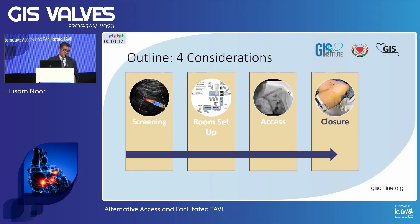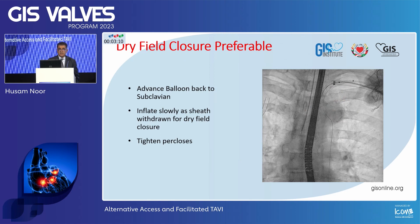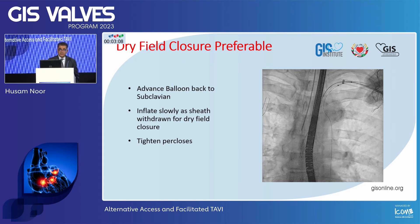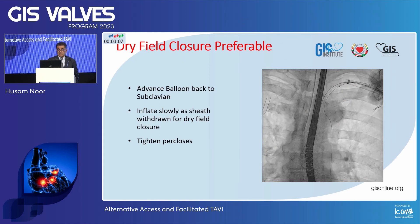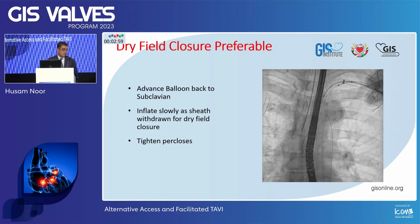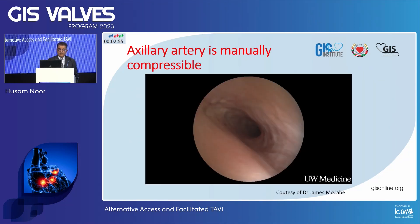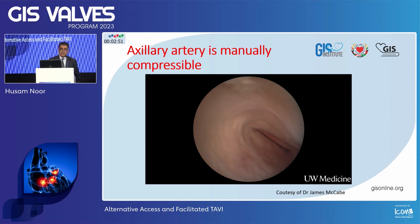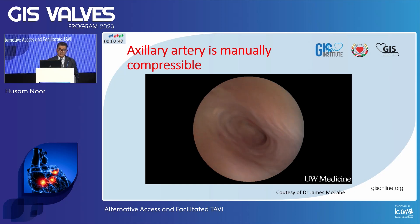The issue then is how to close it. Dry field closure is preferable — similar to what you do for transfemoral: pull it back, put the balloon there, and deploy your Perclose devices. This is a courtesy from Dr. Jimmy McCabe, showing that at segment two you can also compress the vessel if there is some bleeding — so this vessel is compressible.